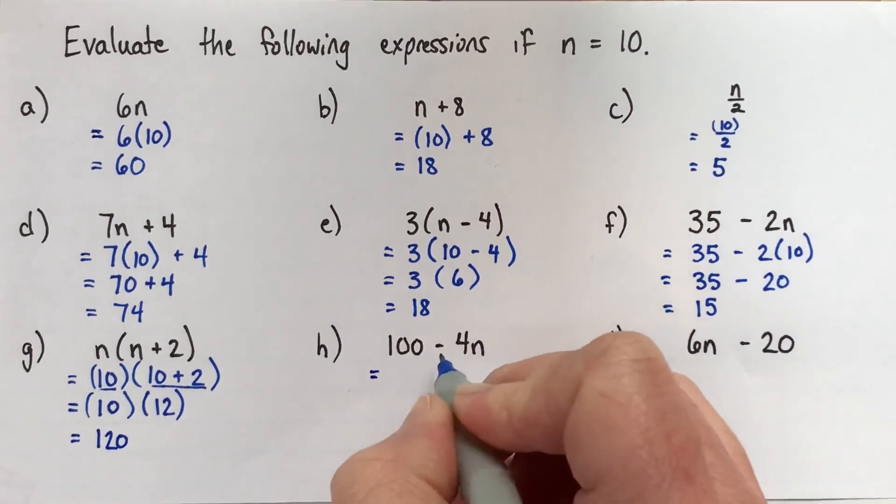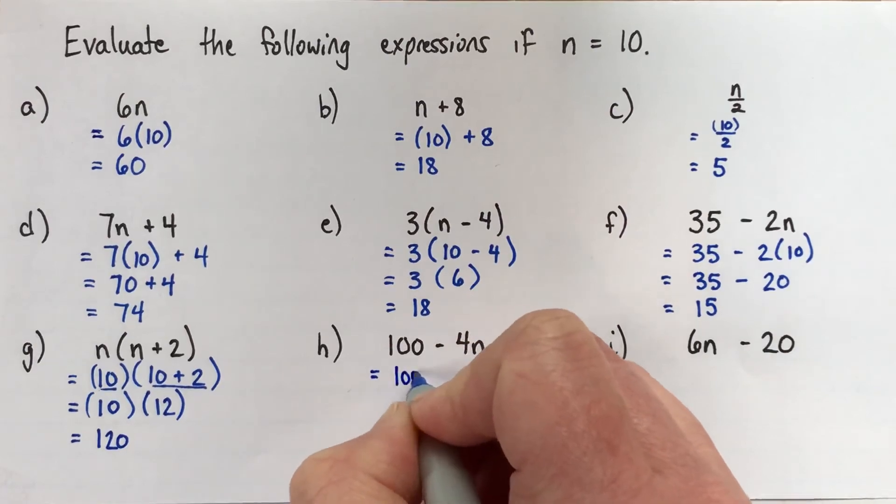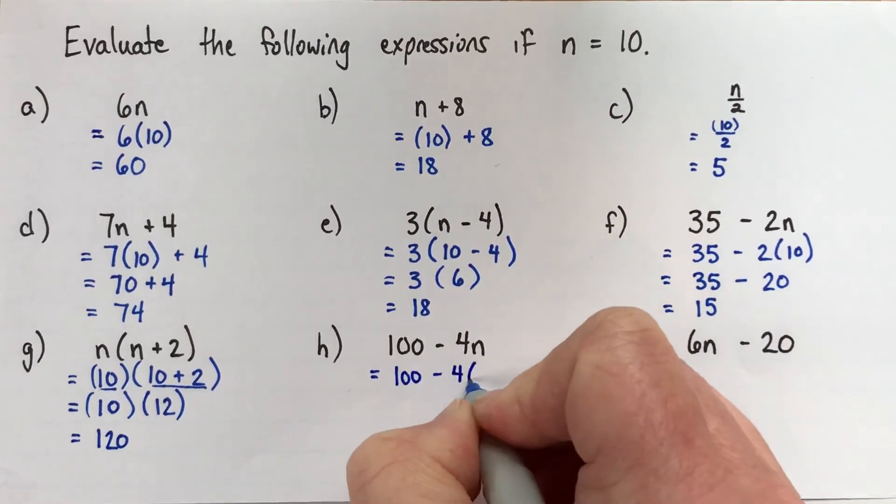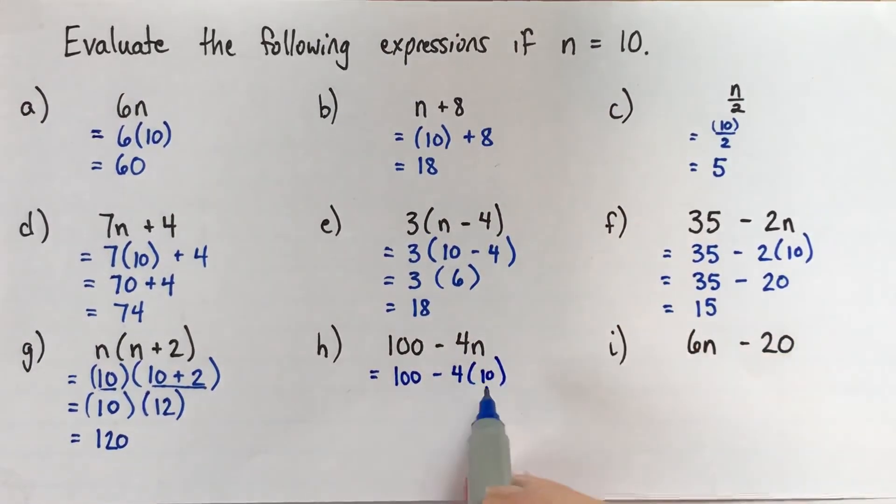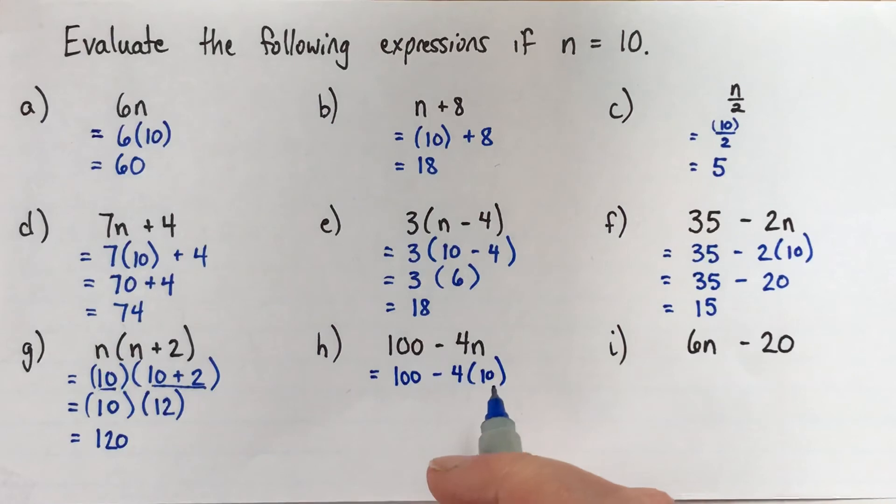Okay, next. 100 subtract 4n. So we'll replace the n with 10. Here's another example. If you did not write the brackets there, you might think it was 410, which isn't. It's 4 times 10. Okay. So we have two operations. We have a subtraction and a multiplication. There are brackets, but there's nothing to do in the brackets. So we don't need to consider those. So we just think, okay, subtraction and multiplication, what gets priority? And the multiplication does. So we'll do 4 times 10 is 40.